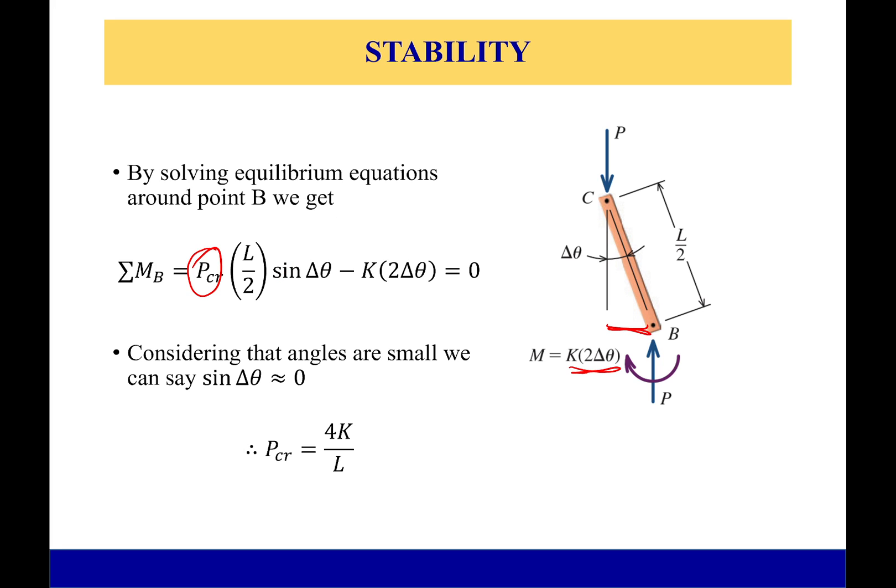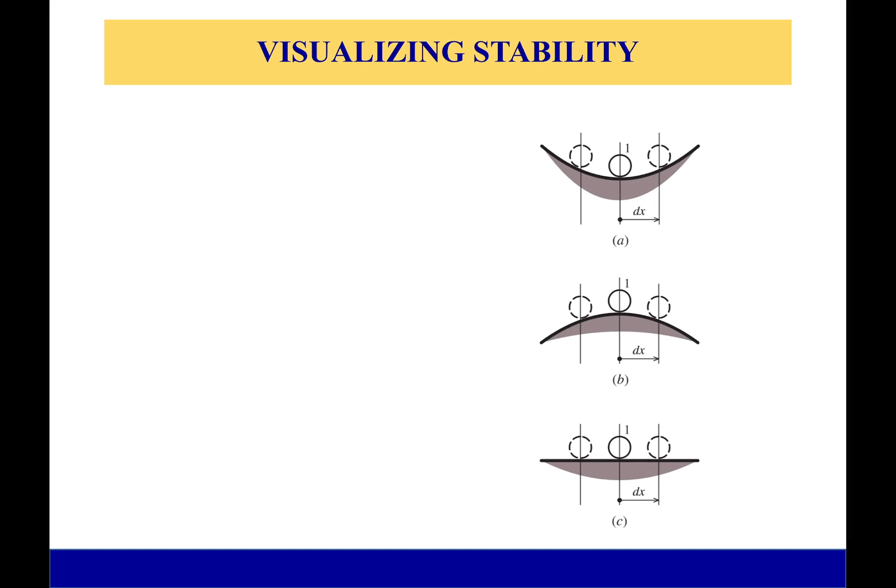When we solve for it, what we get is 4k over L—four times this stiffness over the length. The first thing we should notice here is that the longer my beam is, the smaller my critical load is. That's an important factor: if you have a very very tall beam, it's going to have a very very low critical load, which is why you have to have some sort of support along that beam.